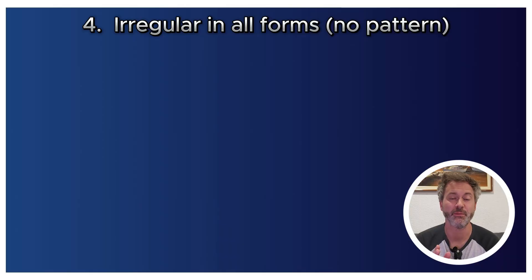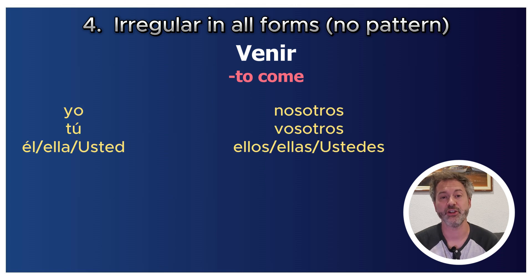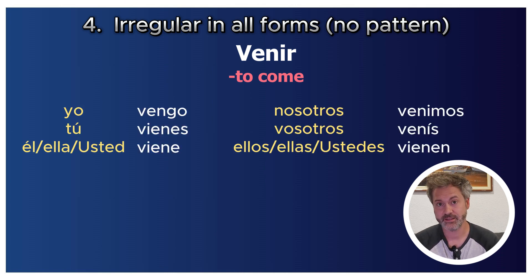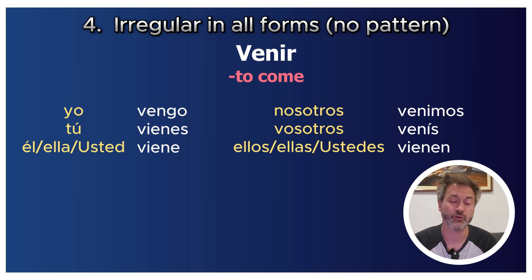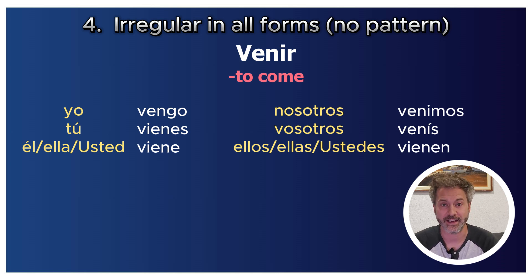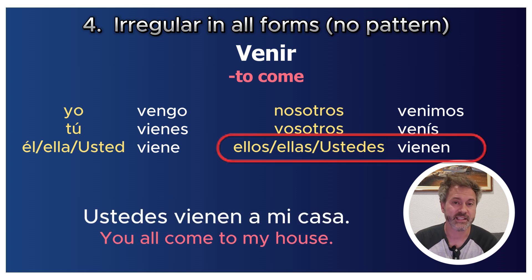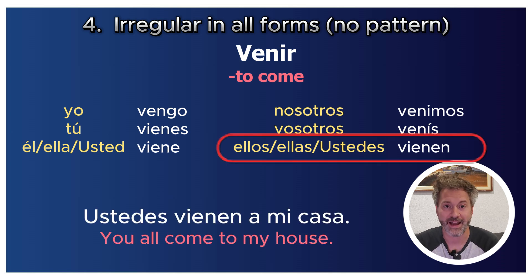Venir similarly: yo vengo, tú vienes, él/ella/usted viene, nosotros venimos, vosotros venís, ellos/ellas/ustedes vienen. For example: 'Ustedes vienen a mi casa' — You all come to my house.